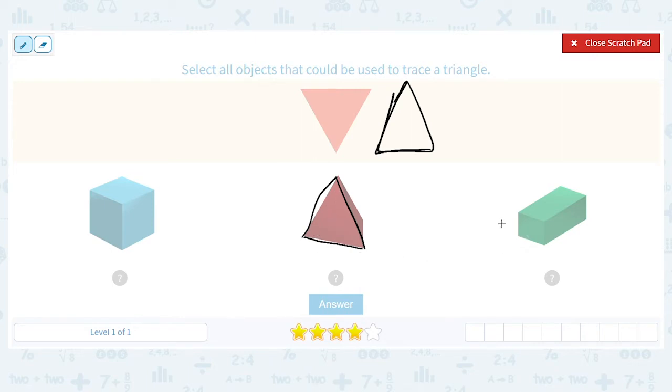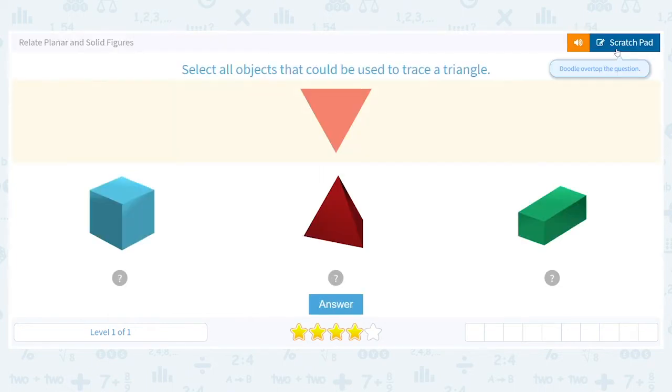Last, I have a rectangular prism, but that's made of rectangles and squares. So can I trace any sides of that to make a triangle? Nope.